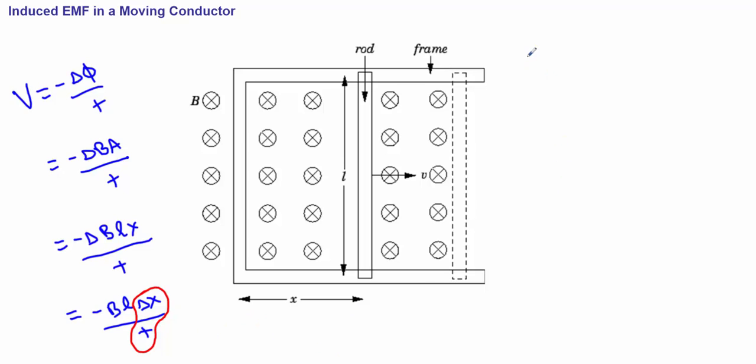So ultimately, we can show that the EMF induced, or the voltage, is going to be B L V. Or this, for a moving conductor, the voltage induced will rely on the external field, the length of the rod, times the velocity in which the rod is moving.